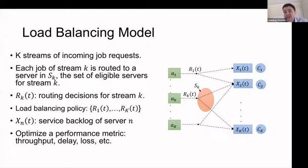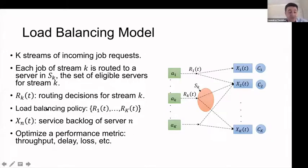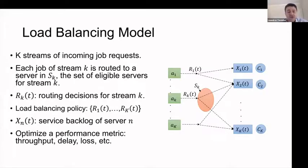The servers might receive jobs from multiple streams. So we have potential backlogs, and the backlog in each server is an important quantity to keep track of. The objective of the load balancing policies is to optimize some metric, whether it is throughput, delay, loss, or a variety of metrics that may arise in different contexts. We can recognize that this model can be encountered in several different settings — in data centers or different networking scenarios.